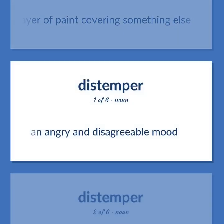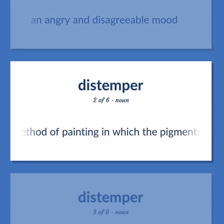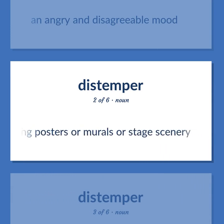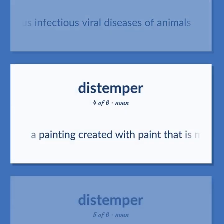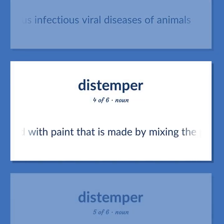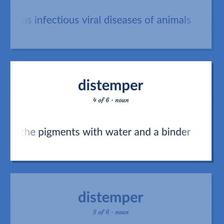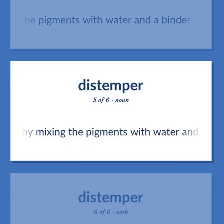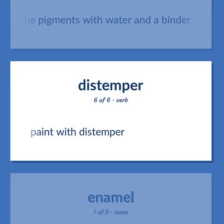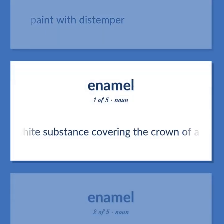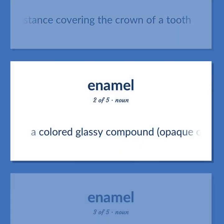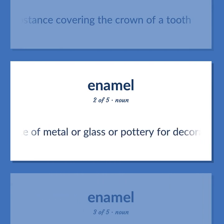An angry and disagreeable mood. A method of painting in which the pigments are mixed with water and a binder, used for painting posters or murals or stage scenery. Any of various infectious viral diseases of animals. A painting created with paint that is made by mixing the pigments with water and a binder. Paint made by mixing the pigments with water and a binder. Paint with distemper. Hard white substance covering the crown of a tooth. A colored glassy compound, opaque or partially opaque, that is fused to the surface of metal or glass or pottery for decoration or protection.